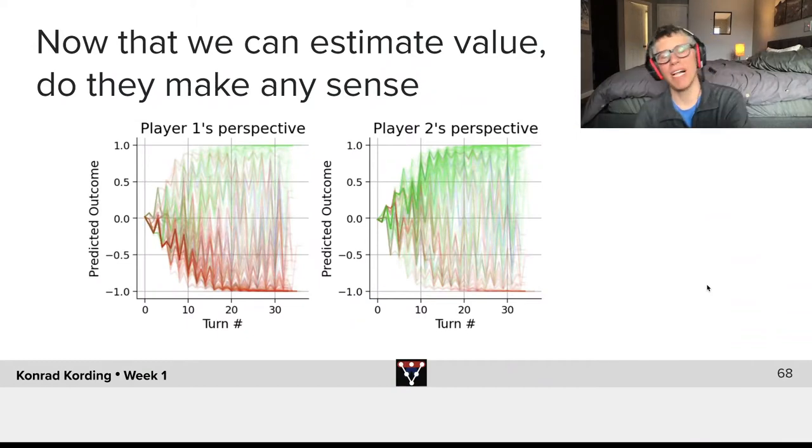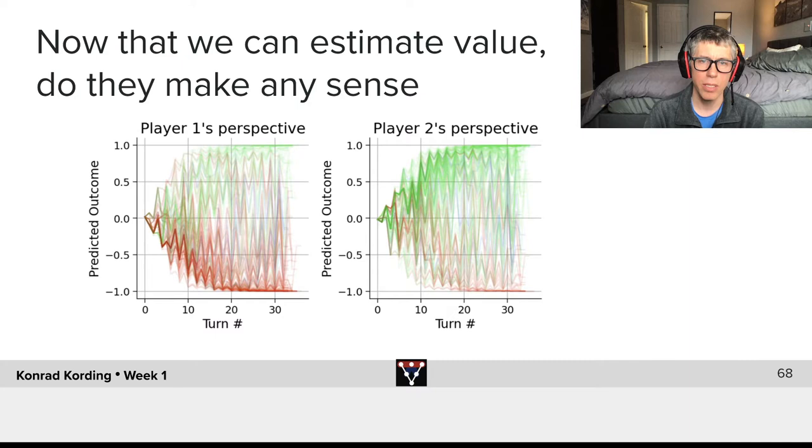Now that we can estimate value, let's see if these values make any sense. So what we did here is we took all those games where one player won in green versus where the other player won in red.